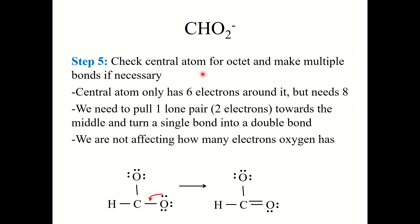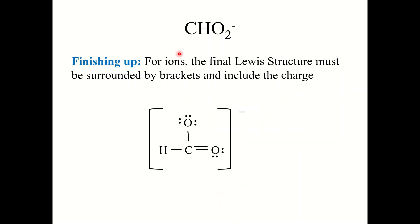Finally, check the central atom for an octet and make multiple bonds if necessary. The central atom carbon only has six electrons around it but needs eight, so we need to pull one lone pair from an oxygen toward the middle to turn a single bond into a double bond. This doesn't change how many electrons oxygen has, but now carbon has two, four, six, eight electrons. All atoms have an octet. With ions, put the structure in brackets and write the charge on the outside — that is the final Lewis structure for CHO₂⁻.